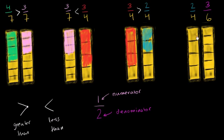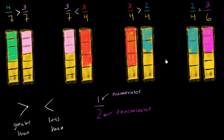Finally, let's compare 2 fourths and 3 sixths. We've already seen 2 fourths — just color in two of the fourths right over there. And for 3 sixths, we've split our whole into six equal sections — 1, 2, 3, 4, 5, 6 — and we need to color in three of them. As you see, we are coloring in the exact same amount of the whole. These two fractions are equivalent — 2 fourths is equal to 3 sixths.